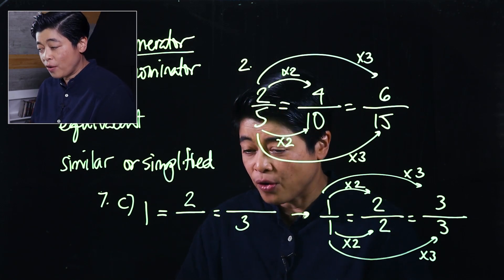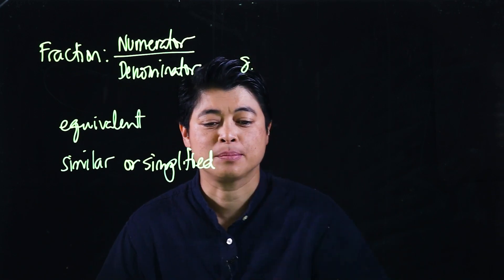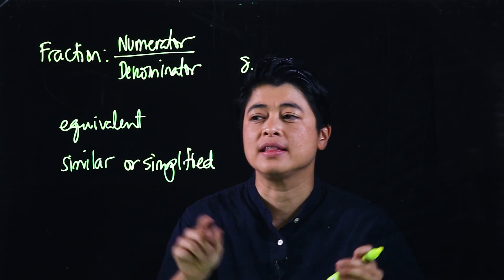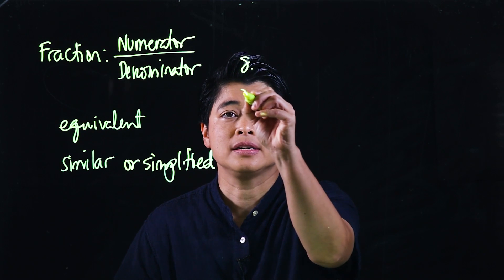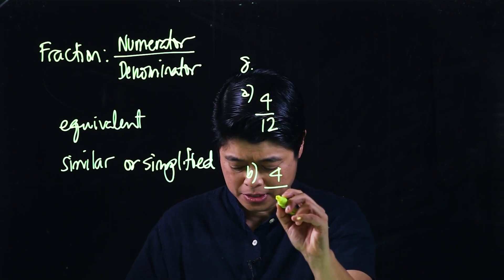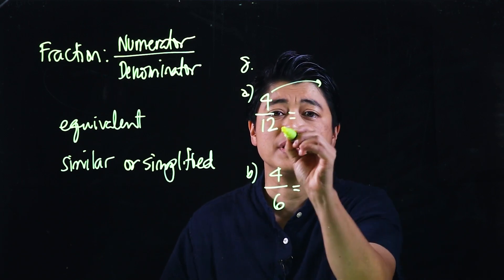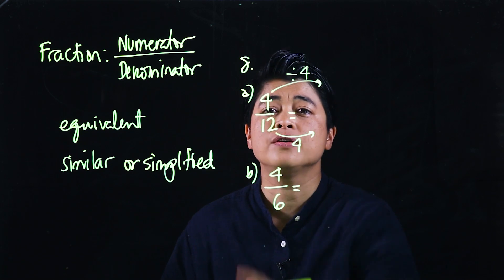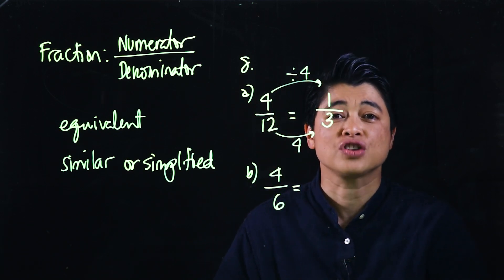Number eight on page 62 says: find the simplest form of the following fractions. To find the equivalent form we multiply; to find the simplified or simplest form we divide by the same number on the numerator and denominator. Looking at the problems: 4 over 12. I can divide both by four, so dividing top and bottom by four gives 1 over 3.